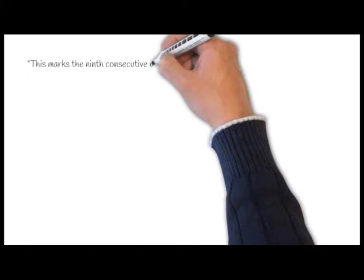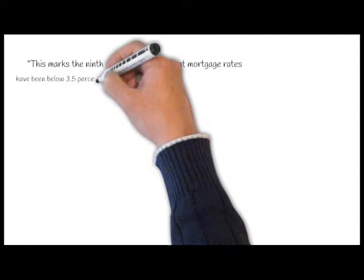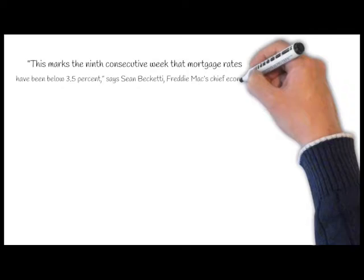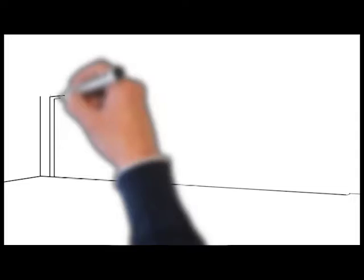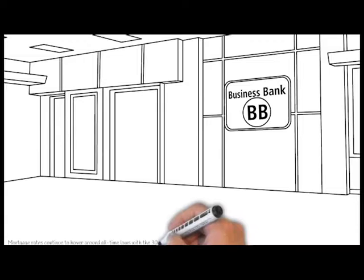Mortgage rates will continue to hover around all-time lows, with the 30-year fixed-rate mortgage averaging 3.43% the last week of August 2016. This marks the ninth consecutive week that mortgage rates have been below 3.5%, says Sean Becketti, Freddie Mac's Chief Economist. Markets are erring on the side of caution ahead of the second estimate for the second quarter GDP and Fed Chair Janet Yellen's speech on Friday.